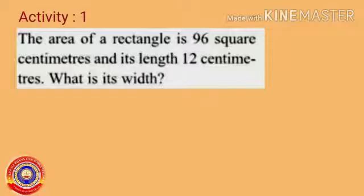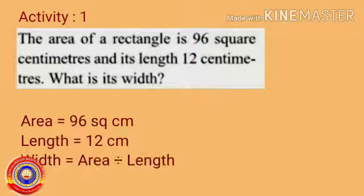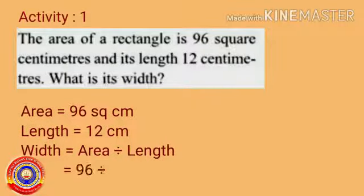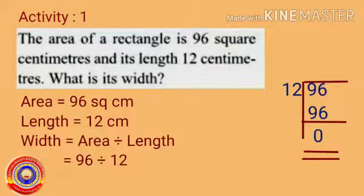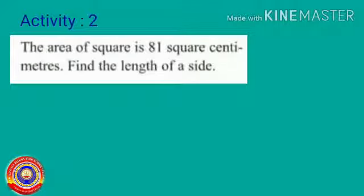Now let's do today's activities. Activity number one: the area of a rectangle is 96 square centimeters and length is equal to 12 centimeters. Then width is equal to area divided by length, that is 96 divided by 12, which is equal to 8 centimeters.